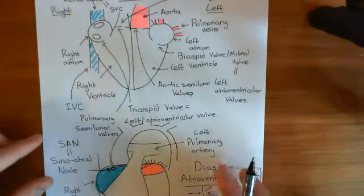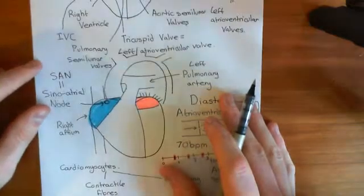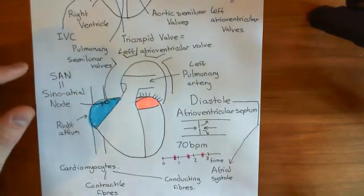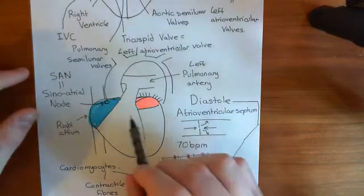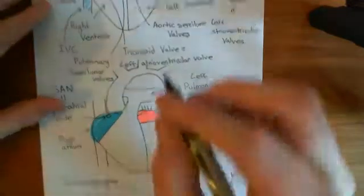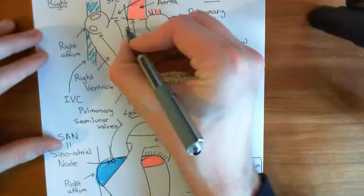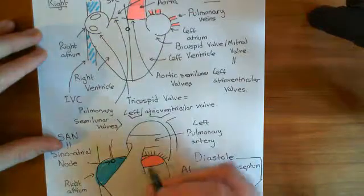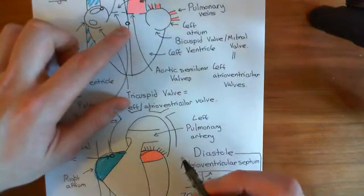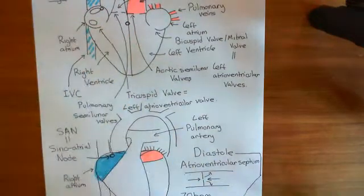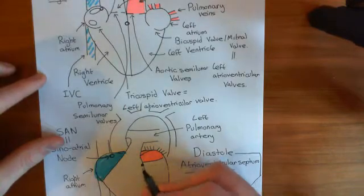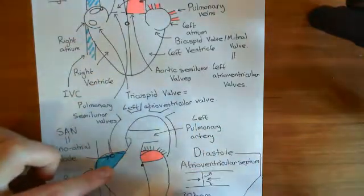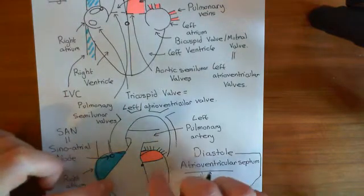The atrioventricular valves have now shut, and what follows is ventricular systole — ventricular contraction. There is a little electrical window, a hole in the atrioventricular septum. This is the atrioventricular node — the electrical window between the atria and the ventricles. It is located in the wall between the two ventricles, the right ventricle and the left ventricle.